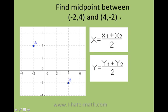Here, you're going to have two coordinates, and we're going to figure out the midpoint between A and B. A is going to be negative 2, 4, and B is going to be 4, negative 2. So how do we find the midpoint?